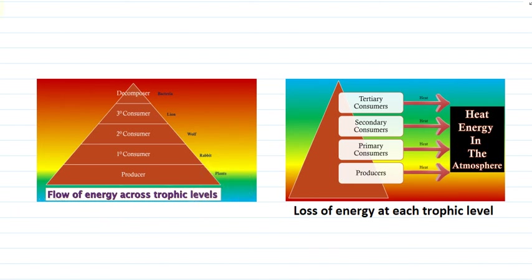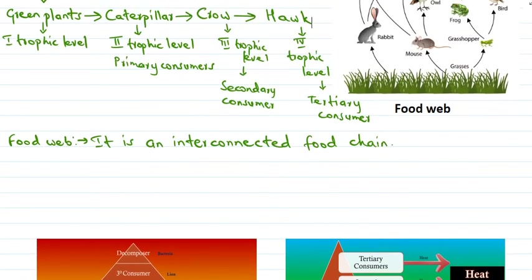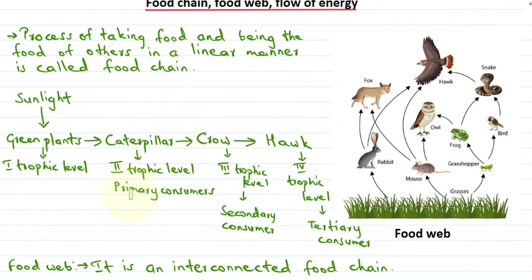Let's quickly revise what we've discussed today. We discussed food chain, food web and the flow of energy. First, energy enters an ecosystem through photosynthesis. Green plants are the producers — they trap sunlight and convert it into chemical energy in the form of glucose. This energy then reaches other organisms that depend on plants for their food.